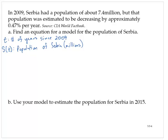Now, since the population was decreasing by approximately 0.47% per year, that's a phrase that clues me into the use of an exponential model. And so I will want to write something of the form s of t is equal to a times b to the t.